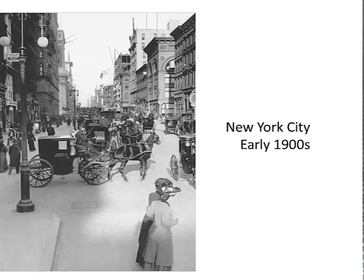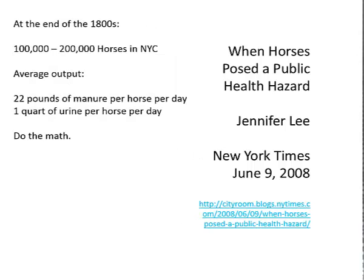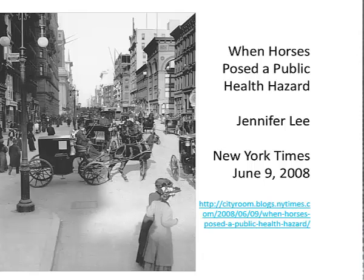Let's take a look at this photograph of New York City in the early 1900s. It comes from a newspaper article published by Jennifer Lee in the New York Times in the summer of 2008. And you can tell it's staged. According to Jennifer Lee, at the end of the 1800s there were 100,000 to 200,000 horses in New York City, with an average output of 22 pounds of manure per horse per day and one quart of urine per horse per day. Multiply those numbers by 200,000 and you have an idea of exactly how much the streets did not appear the way they do in this photograph, which it appears the streets were cleansed for.